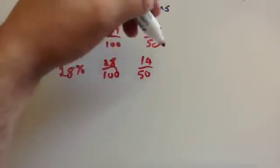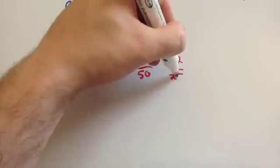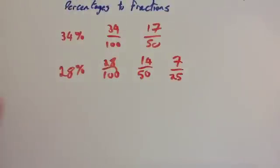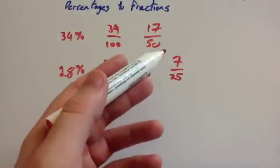Divide them both by 2 again, and you get 7 over 25. And this time you can't divide them by anything, so that's it, 7 over 25.